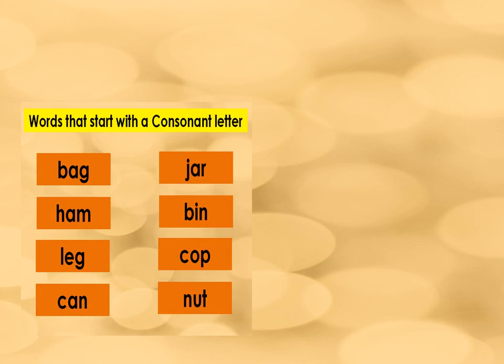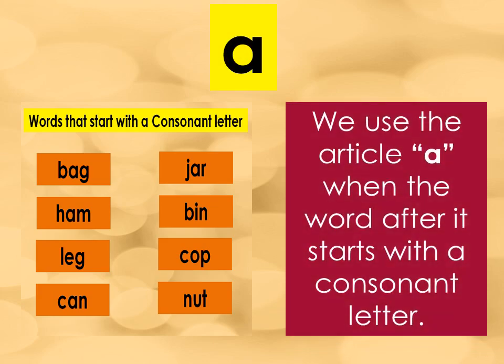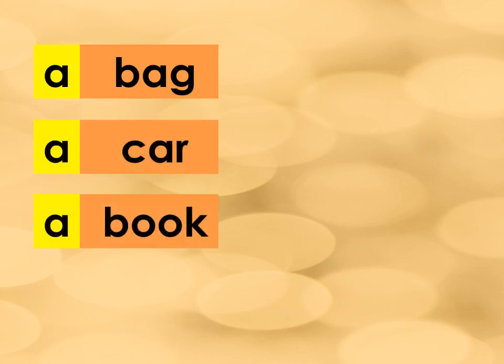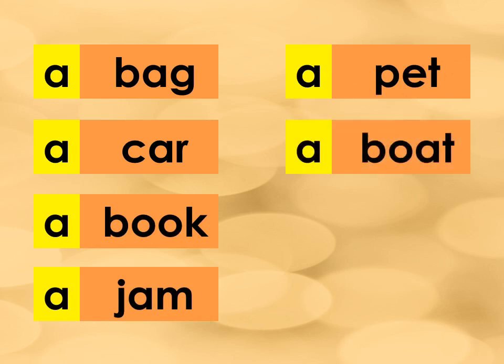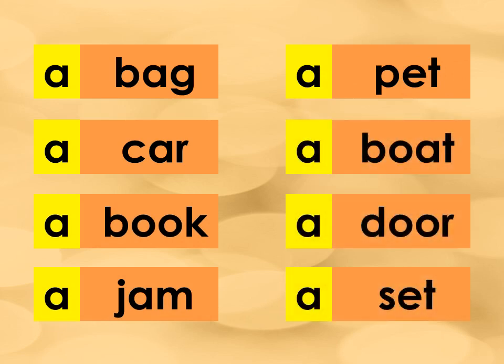Now, what do you think is the article that we should use if the words start with a consonant letter? Do you have any idea? We use the article A. We use the article A when the word after it starts with a consonant letter. Examples: a bag, a car, a book, a jam, a pet, a boat, a door, a set.